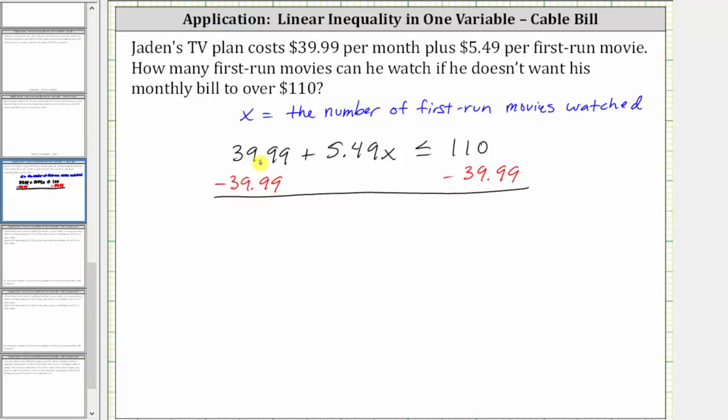Simplifying, 39.99 minus 39.99 is zero. The left side simplifies to 5.49x, which is less than or equal to the quotient on the right.